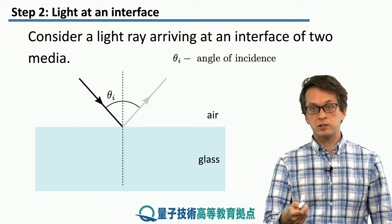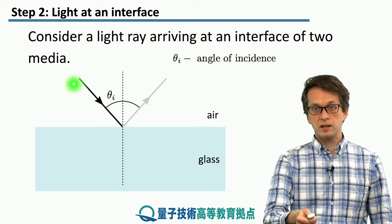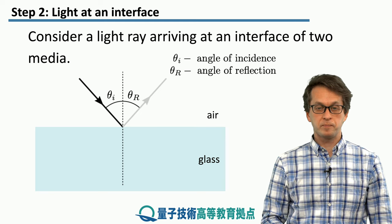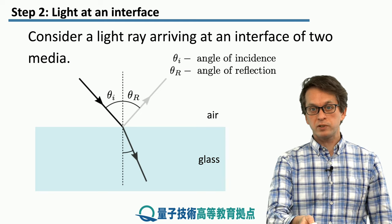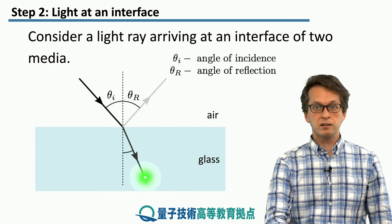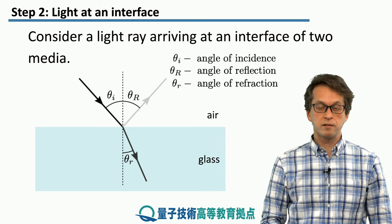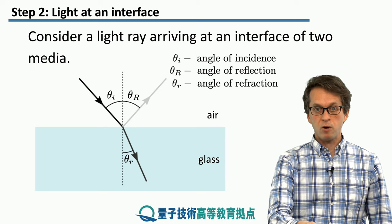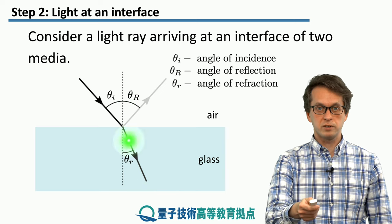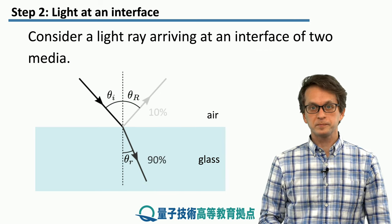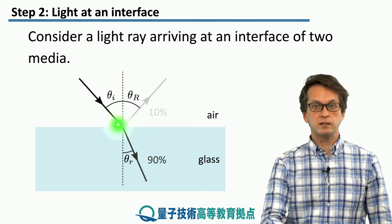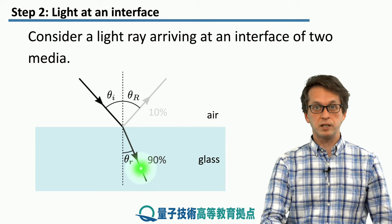What can happen is that the light can actually reflect off the surface at some angle, which we'll call θ_R, the angle of reflection. Also, some portion of the light will get refracted. It will travel into the medium at some angle θ_r, the angle of refraction. Notice that all of these angles are defined with respect to this dotted line, which is the normal to the surface. That's very important. Often, some portion of the light is reflected and some portion is refracted and actually gets transmitted into the other medium.